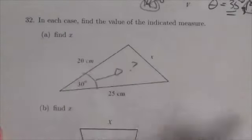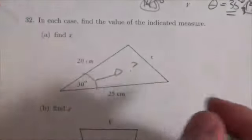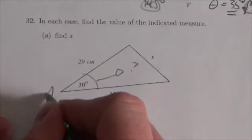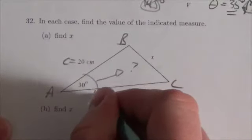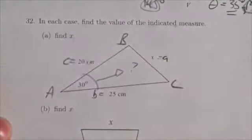So now, what we might do is we might label this so that we can use the cosine law. So maybe we make this ABC, which means this right here will be little c, this will be little b, and it's little a that I'm looking for.